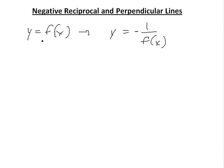So basically, if you look at numbers — if you have, let's say, 2, then the negative reciprocal: 2 can be written as 2 over 1, so the negative reciprocal is going to be negative 1 over 2. You just flip it and add the negative.